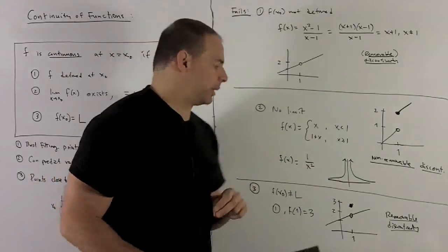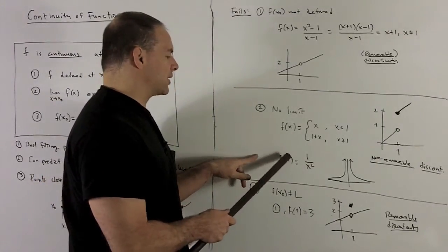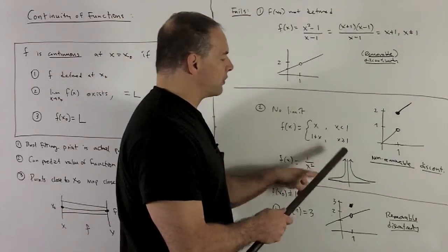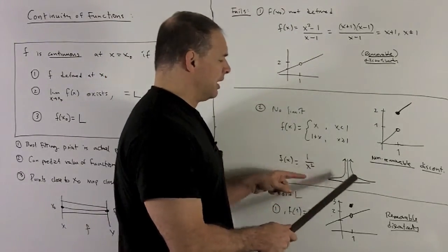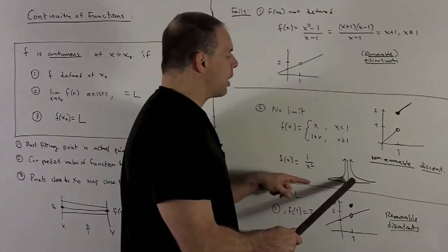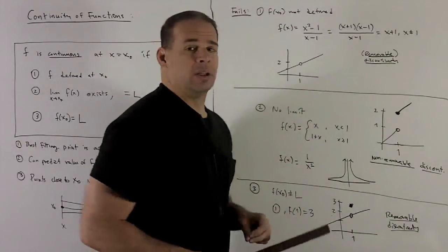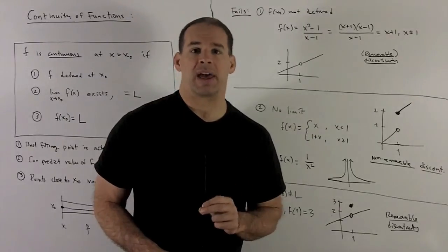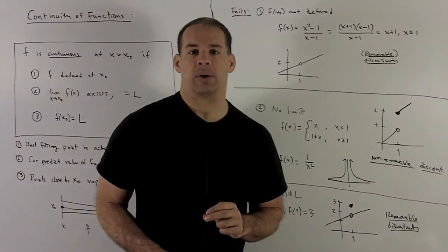An even worse scenario would be where we're looking at f of x equal to 1 over x squared. So here there's no way you could even shift the graph to try to make ends meet up. Here we're going to have division by 0 at 0, and both of these are going to go up to plus infinity. So you have a vertical asymptote, no way to fix that, so it's a non-removable discontinuity.